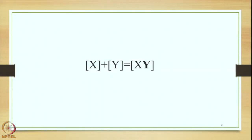The features of Tatpurusha Samasa can be stated in the form of an equation shown on this slide, where we have X and Y — two different independent entities in terms of meaning, word form, as well as accent. But the speaker of Sanskrit has decided to merge these two elements together and generate an output in the form of XY, which is one unit in the form of meaning, word form, as well as accent.